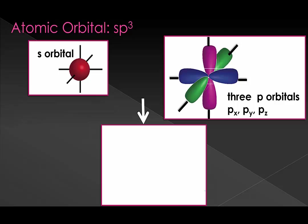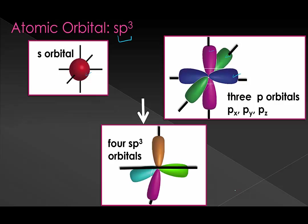Let's move on to sp3. Now we're taking all three p orbitals and combining them with our s orbital, so all of these orbitals are going to be used up. These look very much in between an s and a p orbital. You'll generally see them drawn with just one lobe each, even though they do actually have two lobes, because it gets really messy otherwise. We have four orbitals all in different directions, so this is a tetrahedral arrangement.